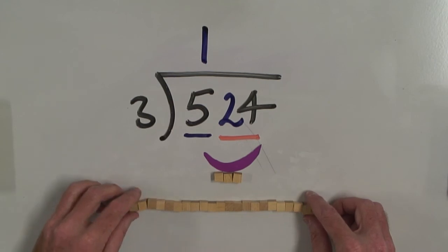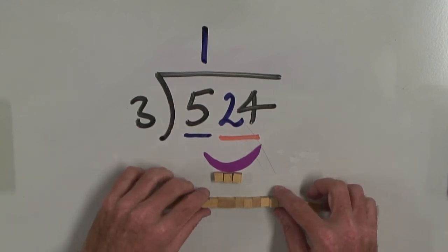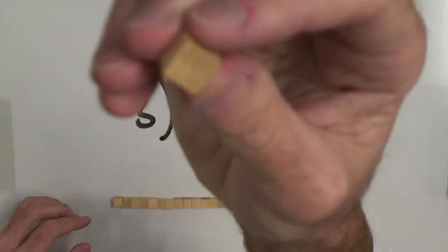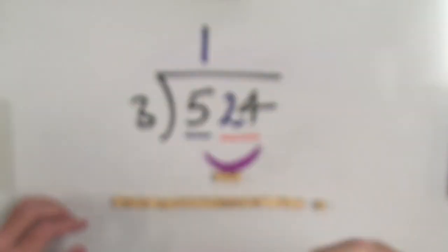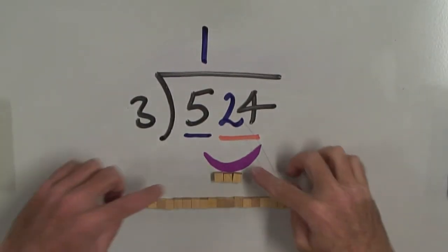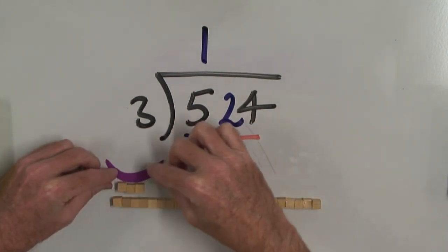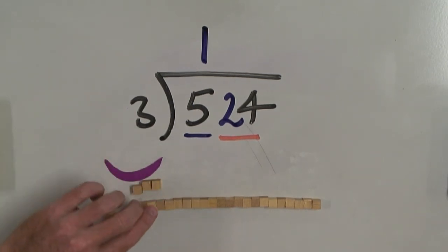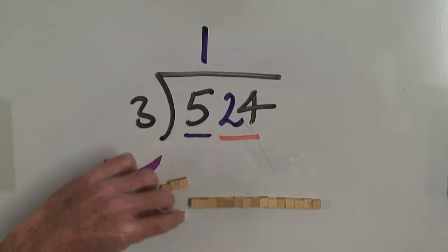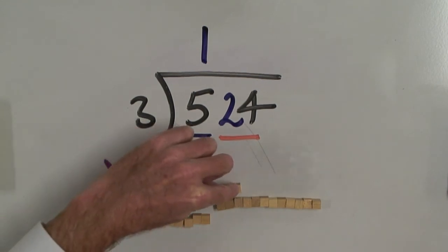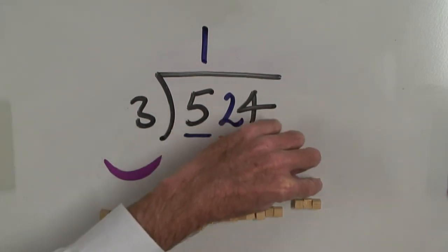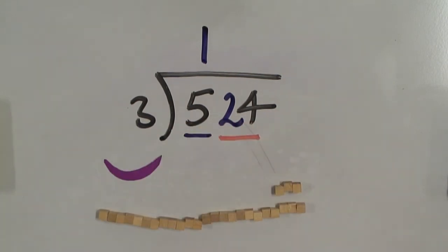So there's my 24. I'm using a set of blocks from the 70s, so some of them are a little bit the worse for wear. So 3 into 24 — how many bites of 3 can I take out of 24? Let's find out. 1 bite, 2 bites, 3 bites, 4 bites, 5 bites, 6 bites, 7 bites, and 8 bites. I could take 8 bites out of 24 with nothing left over. So 3 into 54 goes 18 times. And that's Tiffany's teeth!